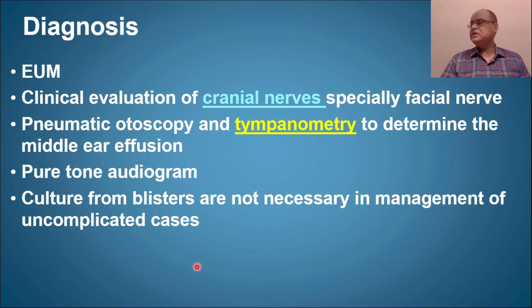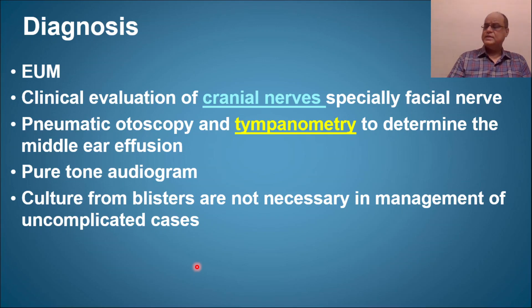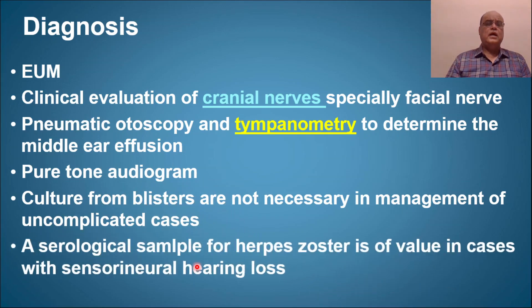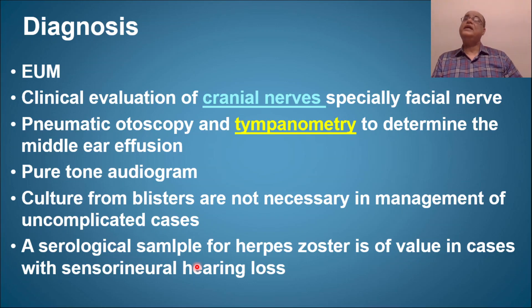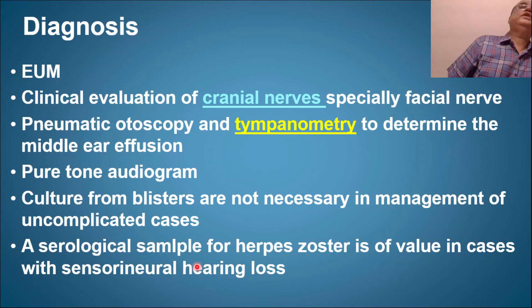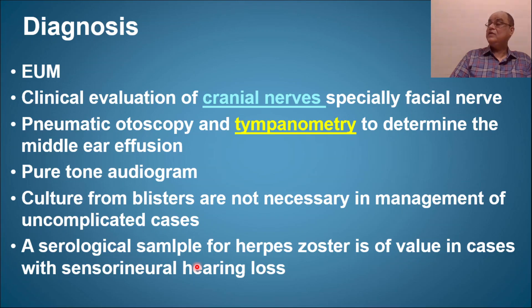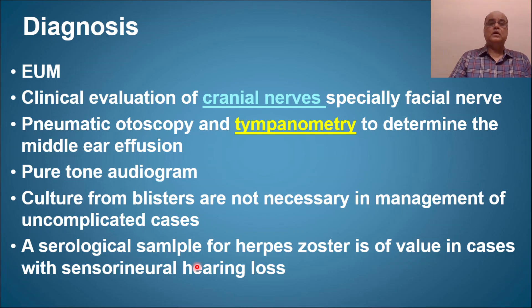Culture from blisters is usually not required in routine uncomplicated cases since these are blood-filled vesicles. However, serological samples for herpes zoster are valuable in cases with sensorineural hearing loss, to rule out involvement of the vestibulocochlear nerve ganglion — as herpes typically affects the seventh cranial nerve ganglion but can also affect the eighth, causing sensorineural hearing loss.